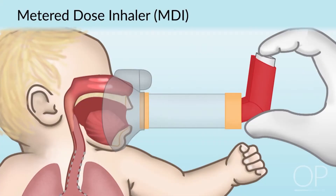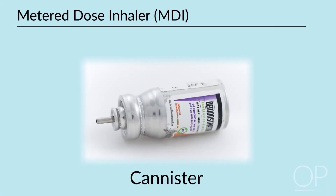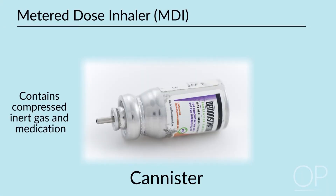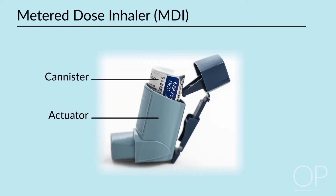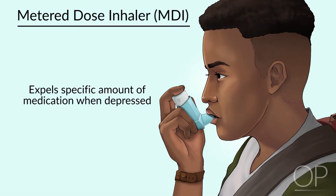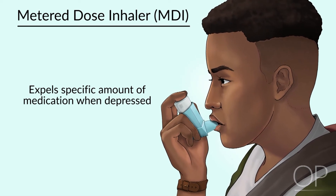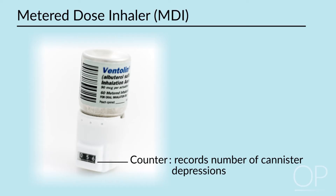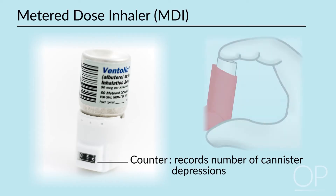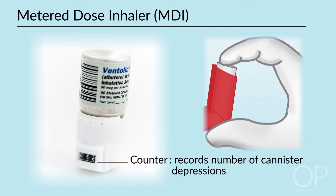A metered dose inhaler consists of a canister, which contains a propellant — a compressed inert gas — and a medication; an actuator that the canister is inserted into and, when depressed, directs a specific amount of medication through the mouthpiece; and sometimes a counter, which retains a record of the number of canister depressions to help gauge when a canister should be changed for your subject.